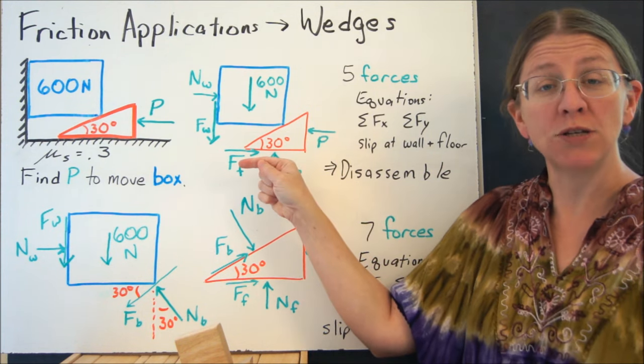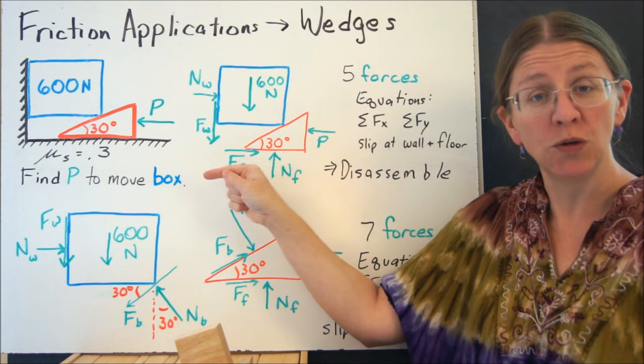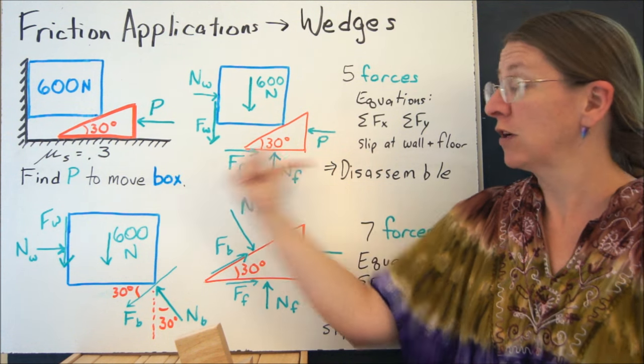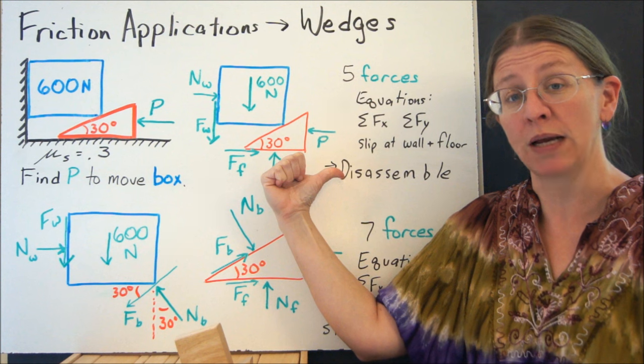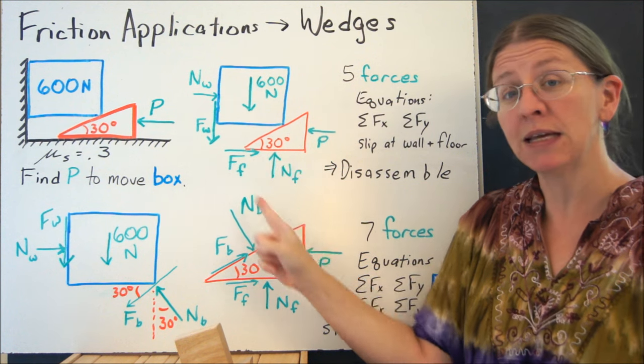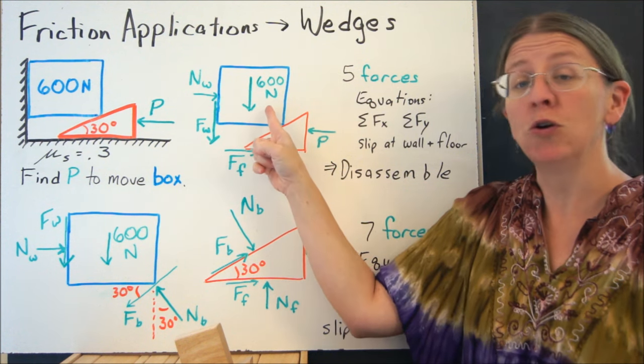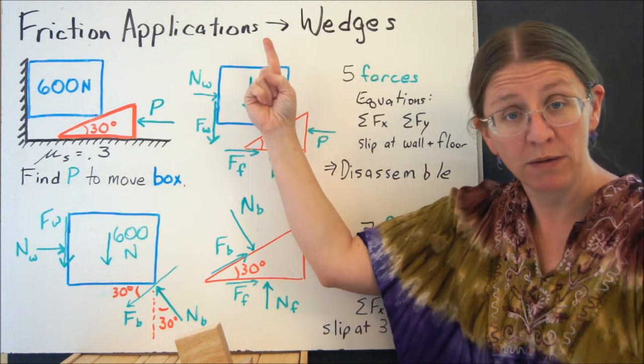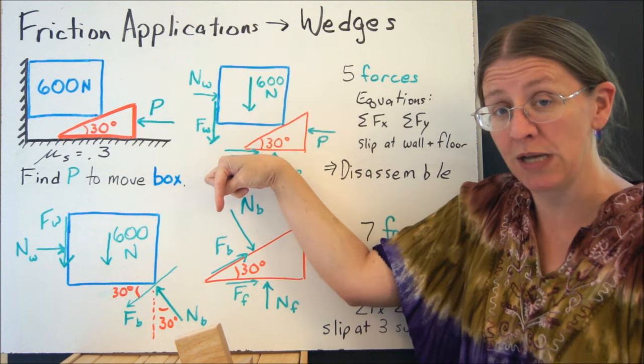Remember that friction has to act along the surface to oppose motion. So if you look at the wedge itself, the wedge would be moving to the left, so the friction force has to point to the right. Similarly, if this thing is to move at all, then that blue block is going to go up, which means the friction force has to go down.